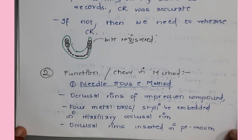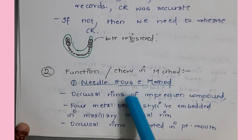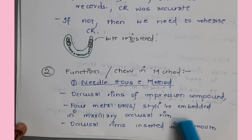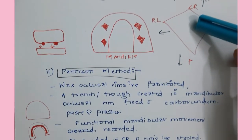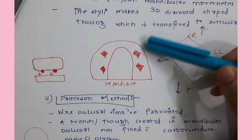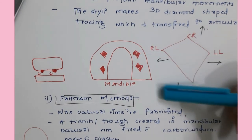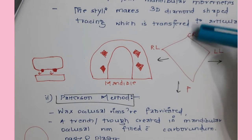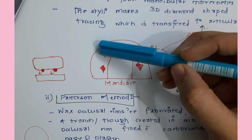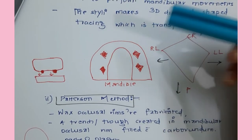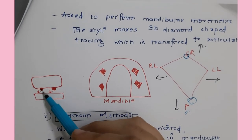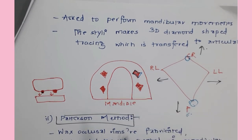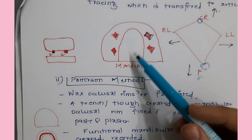The functional or chewing method - also called the Needlehouse method - uses occlusal rims made of impression compound with four metal balls or styli embedded in the maxillary occlusal rim. The patient is guided in centric relation, left lateral motion, right lateral motion, and protrusive motion. All motions except centric relation are called eccentric relations. The styli create depressions on the mandibular rim in a diamond shape - the most anterior point is centric relation and the most posterior point is protrusive motion. This tracing is then transferred to an articulator.